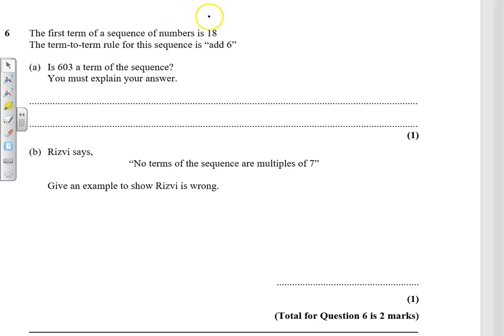Okay, the first term of the number sequence is 18. The term-to-term rule for this sequence is add 6. Is 603 a term in the sequence? You must explain your answer. Well, if we've got 18 and we're adding 6, we